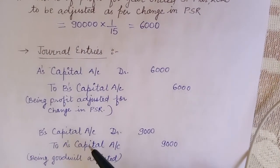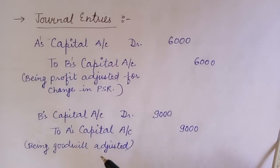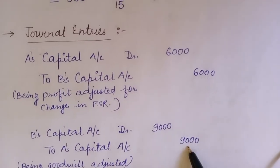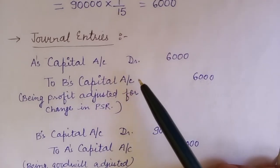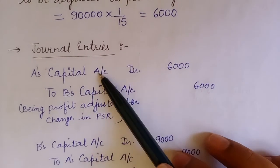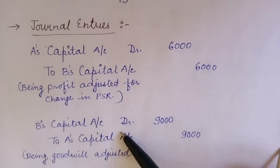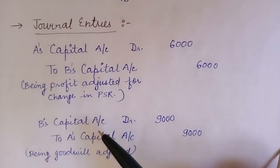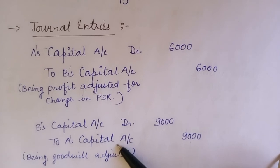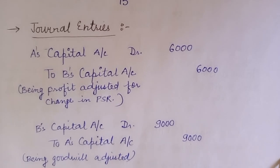For the goodwill adjustment, the gaining partner's capital account is debited and the sacrificing partner's capital account is credited. The gaining partner is B and the sacrificing partner is A, so it is ₹9,000 each. Whenever it is the adjustment of goodwill, it will be the gaining partner's capital account debited to the sacrificing partner's capital account.